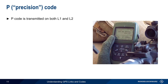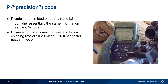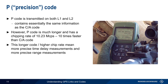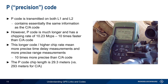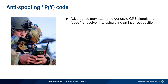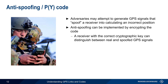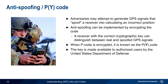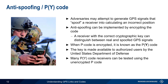P code, or precision code, is transmitted on both L1 and L2, and contains essentially the same information as the CA code. However, P code is much longer and faster than CA code. This longer code and higher chip rate mean that we get a more precise time and range measurement, about 10 times better than the coarse or non-precision code. This tenfold increase reduces the distance of one chip from 293 meters in CA code to only 29.3 meters in P code. An adversary could potentially generate GPS signals in order to spoof a receiver and cause it to calculate an incorrect position. Anti-spoofing involves encrypting the code so that a receiver with the correct key can distinguish between real and spoofed GPS signals. When P code is encrypted, it's referred to as PY code, and only authorized users can obtain this key from the U.S. Department of Defense. Real world P code is always encrypted and transmitted as PY code, but many PY receivers can actually be tested by sending them unencrypted P code.